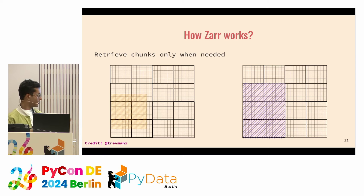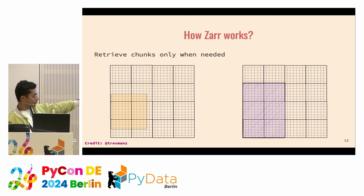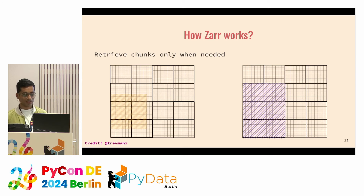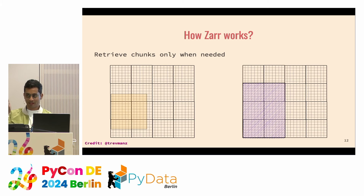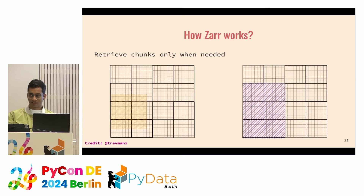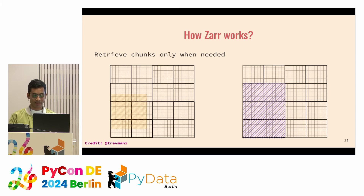Retrieval works in a way where, if you want to select chunks that are within a certain selection area, Zarr will only load the chunks in that area — not the entire array. So if you have a thousand gigabytes of data and you only want a few gigabytes of that, Zarr will only load that portion. You can store it, load it, make changes to it, and save it back, which saves a lot of space and headaches when working with big datasets.